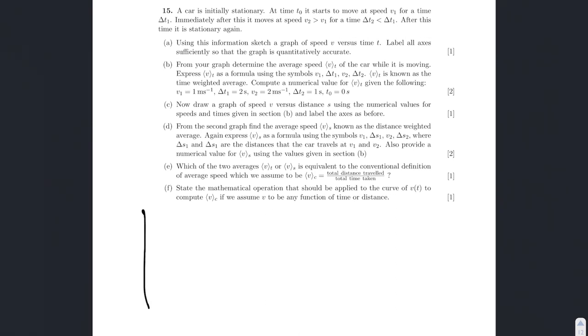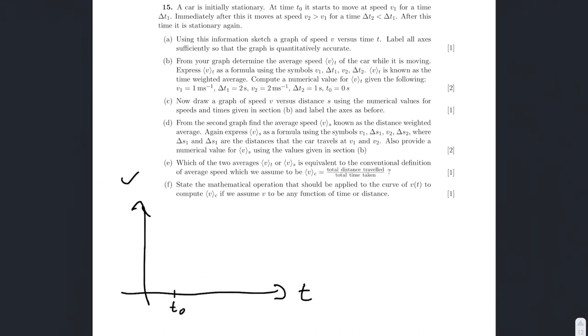Ok, so if we just draw a simple vt graph here. We're told that we have two speeds v1 v2. It starts at time 0 which we're going to call here.